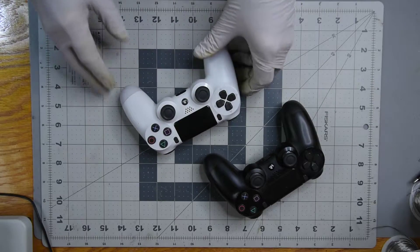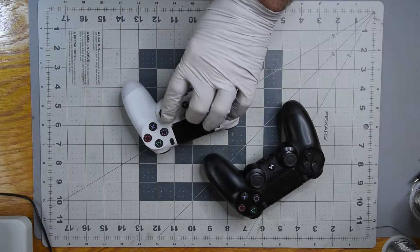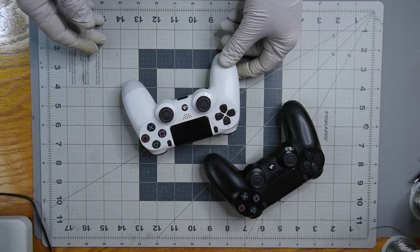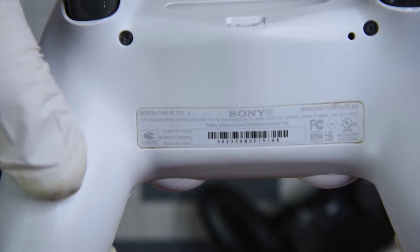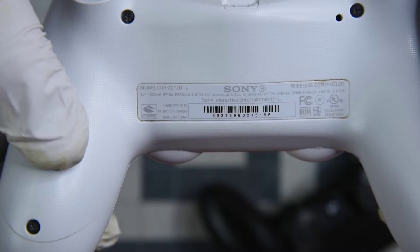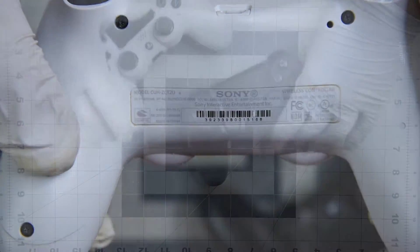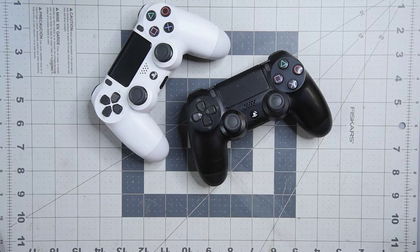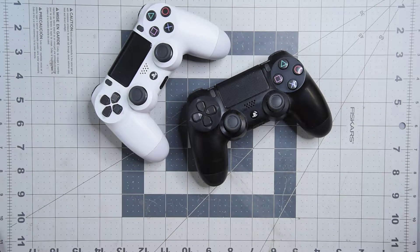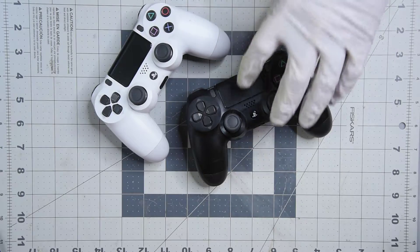I have two PS4 DualShock controllers that are acting up. Both have problems with the left joystick. The problem being the controller acts like you are pushing on the stick when you are not touching it. On the white controller, the right stick just doesn't act quite normal. Cleaning the potentiometers in them has not fixed the problem, so it's time to replace them.